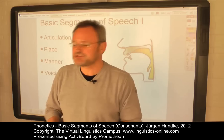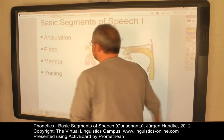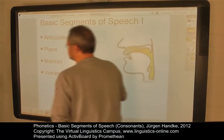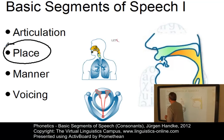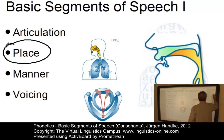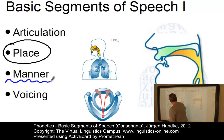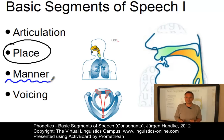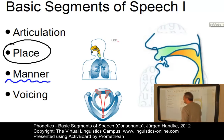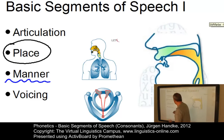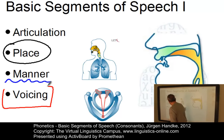We can set up two distinct articulatory parameters for consonants. The first is the place of articulation — that is, where does the obstruction occur. The second is the manner of articulation — that is, what type of obstruction is involved. The third parameter is binary: it concerns the state of the glottis, that is, do the vocal folds vibrate or not.